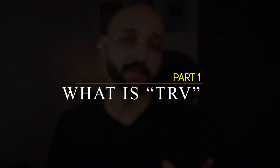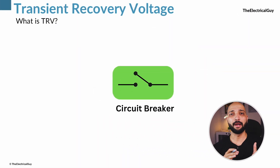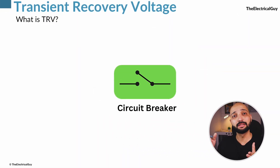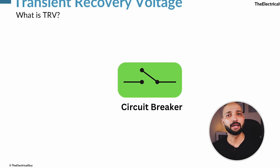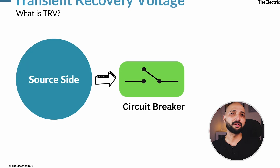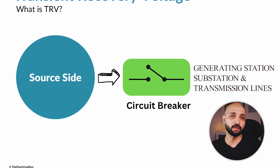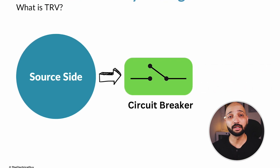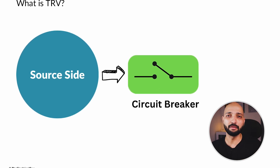All types of circuit interrupting devices can be considered as the link that joins two electrical networks. One side of the circuit breaker is the network delivering power, and the other side is the network consuming the power. For example, on the left hand side of the breaker, we have a generating station, substation, and transmission lines — this network can be considered as the source side network.